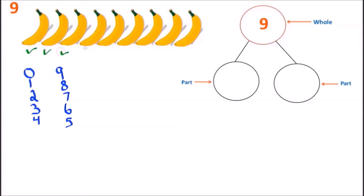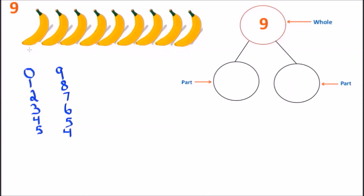Let's keep counting: one, two, three, four, and five — put down the number five. How many bananas remain? One, two, three, and four — we have four. Now we switch the numbers: five on the left side and four on the right. Before we had four on the left and five on the right. These are two separate number bonds — four and five, and five and four — but both give us the number nine.